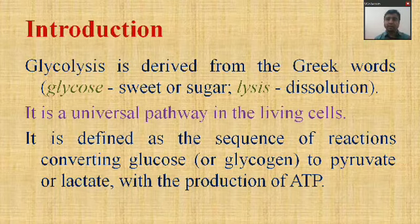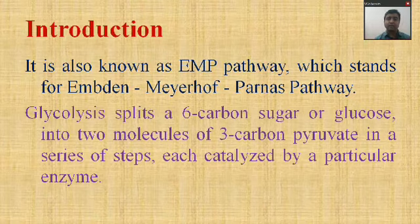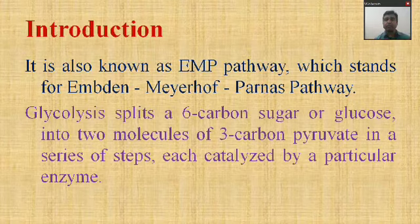Glycolysis is defined as the sequence of reactions converting glucose or glycogen to pyruvate. It consists of nearly 10 reactions. It is also known as the EMP pathway, named after the scientists who discovered it — Embden, Meyerhof, and Parnas. In glycolysis, from one molecule of glucose there occurs formation of pyruvate.